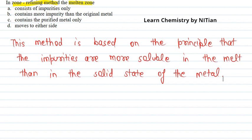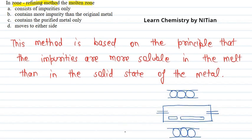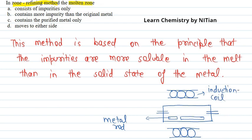Here, we will understand the zone refining method with the help of a diagram. In this diagram, this is representing the metal rod. These are the induction coil heaters. And this is the molten zone.